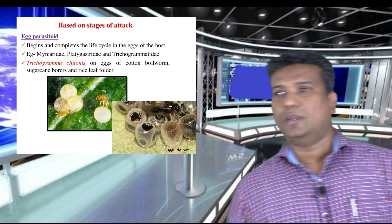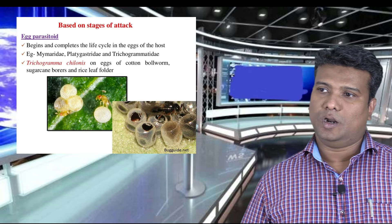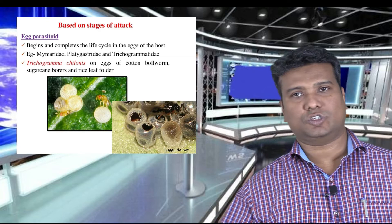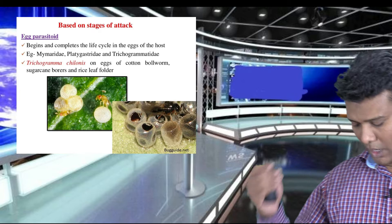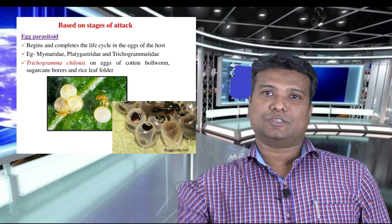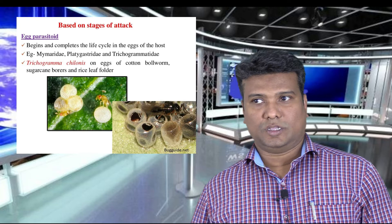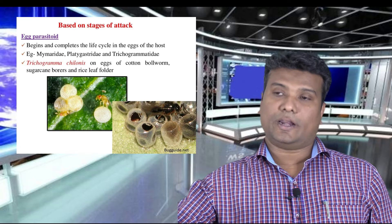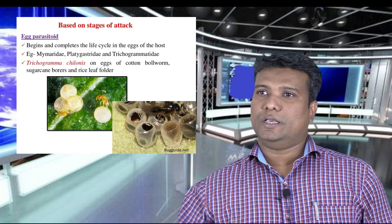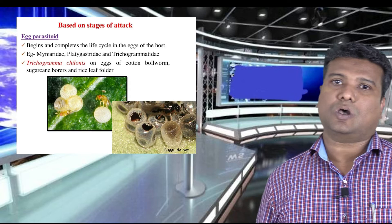These parasitoids are classified into three categories. The first classification is based on the stage of attack of the host species. The first type is the egg parasitoid — these parasitoids lay their eggs on the eggs of other hosts and utilize that protein material for their development. They lay their eggs on the eggs of other insects. An example is Trichogramma species; most Trichogramma species are egg parasitoids.